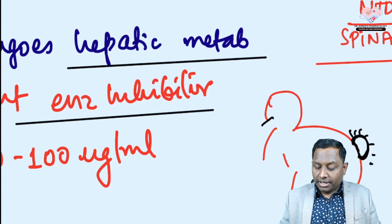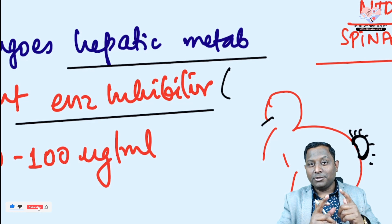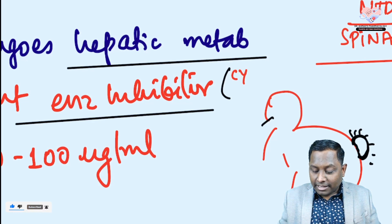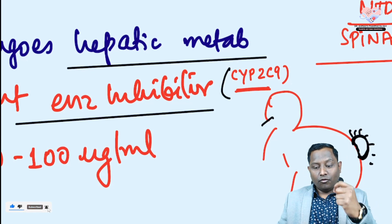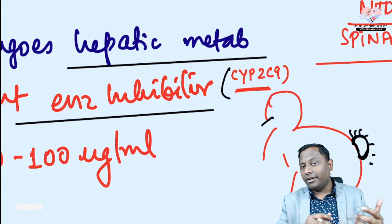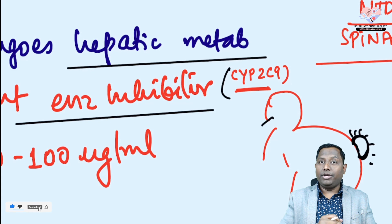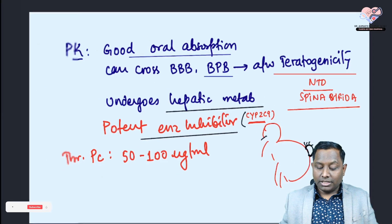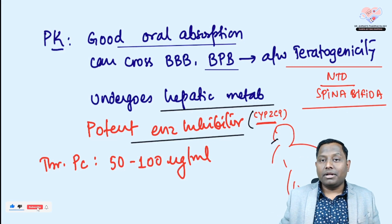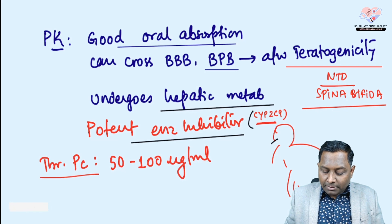Valproate is not a substrate of CYP3A4 — it is a CYP2C9 inhibitor. Therefore, any drug metabolized by CYP2C9 will be affected; good examples are phenytoin and warfarin, whose metabolism can be significantly affected because valproate is a very potent enzyme inhibitor of CYP2C9.